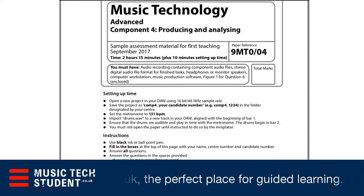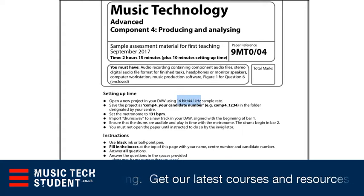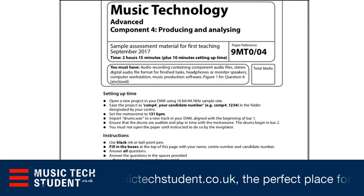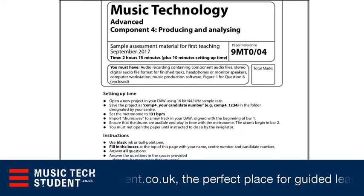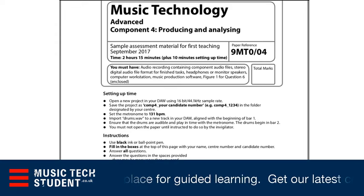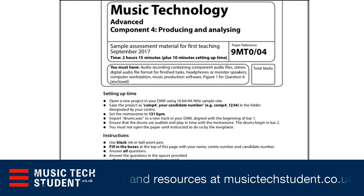During the setup time you're going to have to set up your DAW — so Logic — with the following settings. In this particular instance they want you to set it up as 16-bit, 44.1kHz, which is fairly standard. You're going to then save the project called 'Comp 4' and then your candidate number in the folder that you've created. They are not allowed access to any internet, so tell them to open nothing else but Logic or whatever they're working from — they can get heavily penalized if they start browsing the internet.